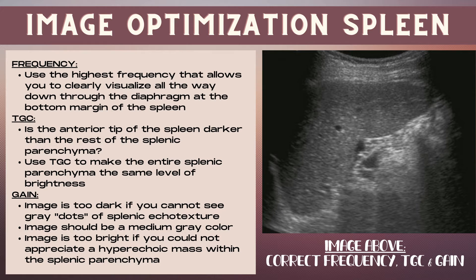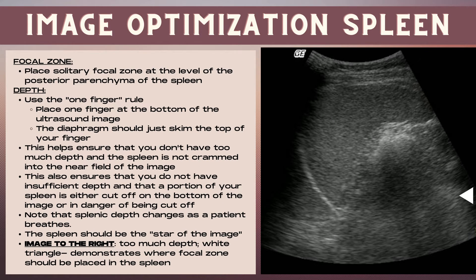For gain, the image is too dark if you cannot see the gray dots of the splenic echo texture. The gain should be set so that the spleen is a medium gray color. The image is too bright if you cannot appreciate a hyperechoic mass within the splenic parenchyma. The next control to optimize is the focal zone — place a solitary focal zone at the level of the posterior parenchyma of the spleen.